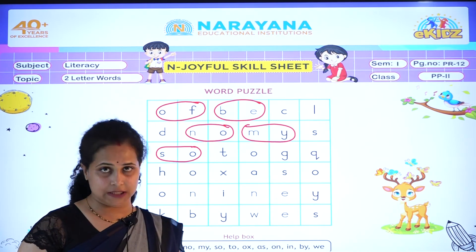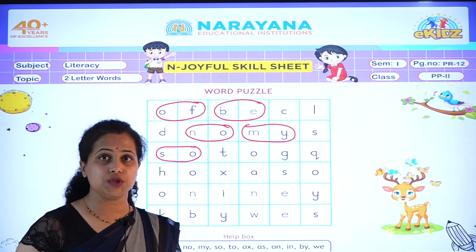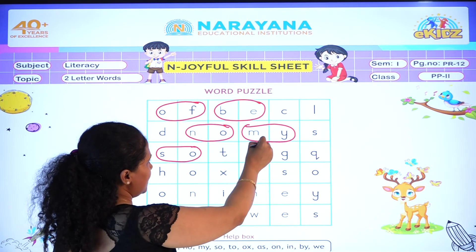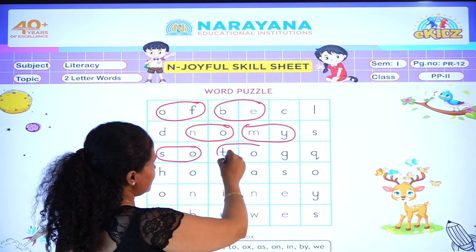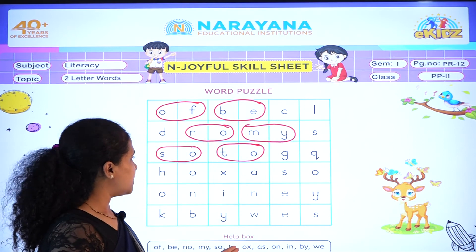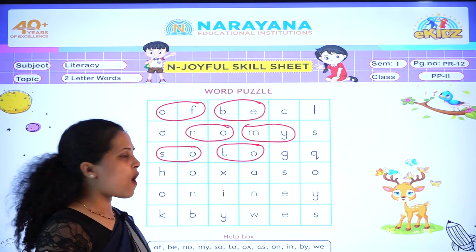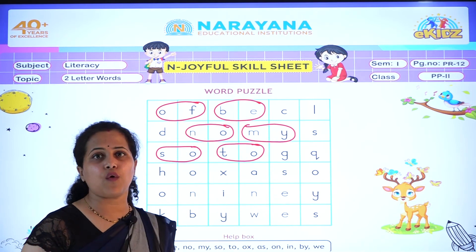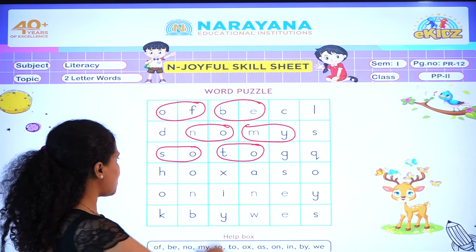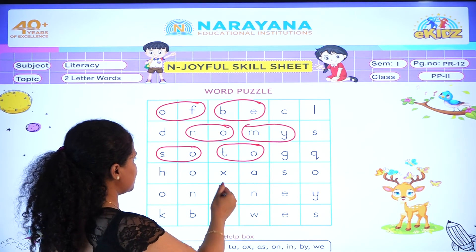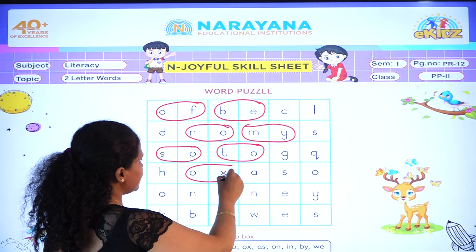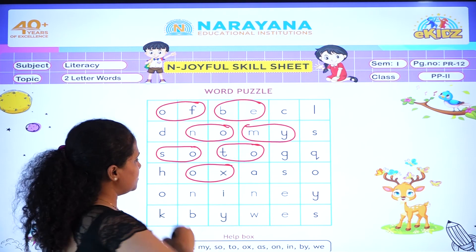Next word is 'two'. T-W-O. Here is 'two'. Let's circle it. Next word is 'ox'. O-X. Ox. Where is 'ox'? Here is 'ox'. Good job.